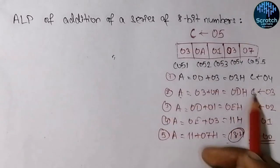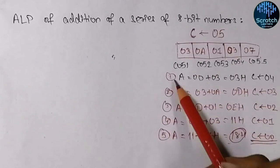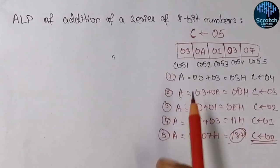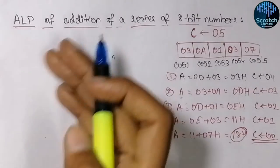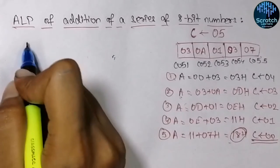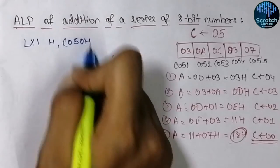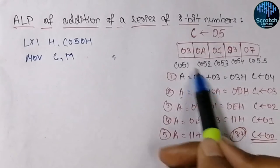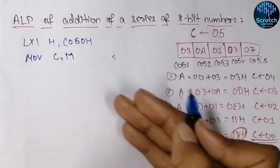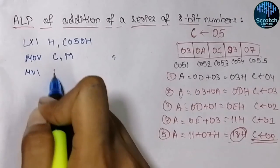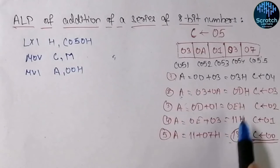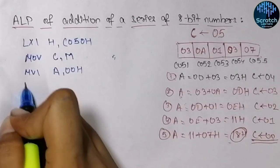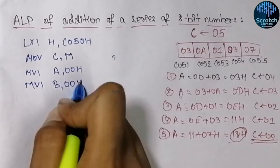Each time we are adding a new element with the accumulator and decrementing C. Since there are five elements, this operation is performed five times. We will use a loop so the code doesn't become too long. In the assembly program, we first input the total number of elements using LXI H, comma C050 hex, and move it into register C. We initialize the accumulator with 00 using MVI E, comma 00 hex. We also initialize register B with 00 to keep track of carry.